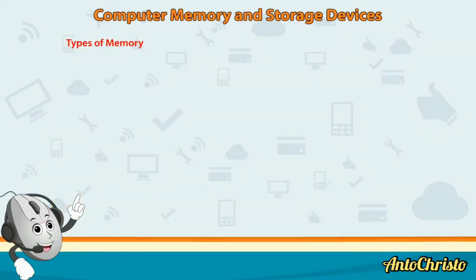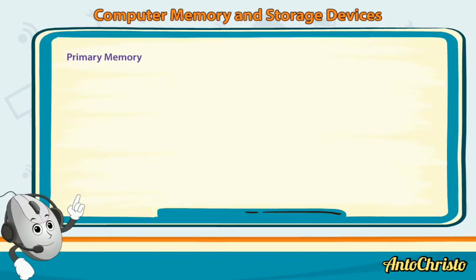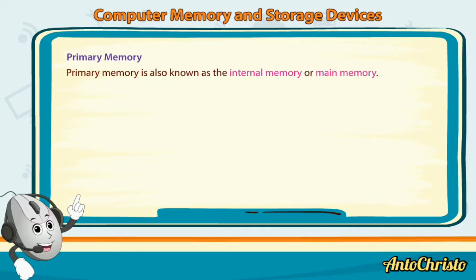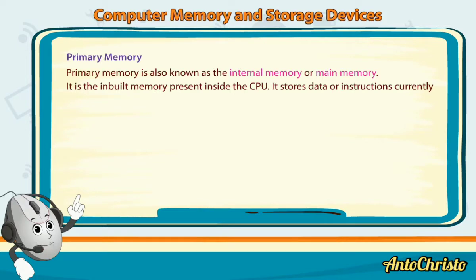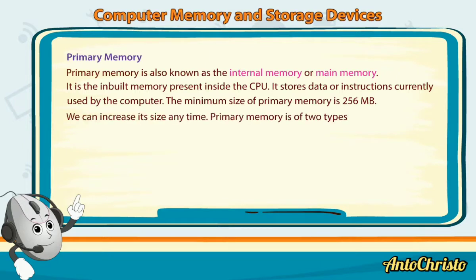Types of Memory: Computer memory is of two types — Primary Memory and Secondary Memory. Primary Memory is also known as Internal Memory or Main Memory. It is the inbuilt memory present inside the CPU. It stores data or instructions currently being used by the computer. The minimum size of Primary Memory is 256 MB, and we can increase its size any time.